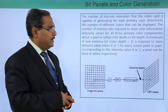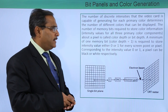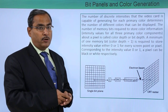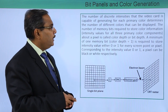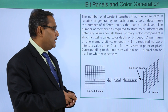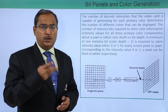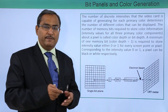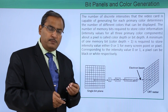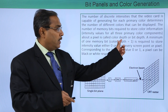The number of discrete intensities that the video card is capable of generating for each primary color determines the number of different colors that can be displayed. The variation in intensity will decide the effective number of colors on our display. The number of memory bits required to store color information and intensity values for all three primary color components about a pixel is called color depth or bit depth. For example, representing each pixel color with three bits gives eight different combinations; with four bits, 16 combinations. The number of colors a pixel can have is constrained by the number of bits used to represent that color — known as color depth or bit depth.